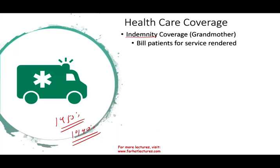Under indemnity coverage, the healthcare provider bills the patient for services provided, and the insurance company pays. This system existed up until the 1990s. Think about the incentives: if the insurance company pays your bill and there's no premium or deductible, the doctor has every incentive to bill as much as possible. You go in for back pain and the doctor checks your neck, back, and legs — because if they can bill it, the insurance company will cover it. So this system had no incentive to control costs by doctors or hospitals.